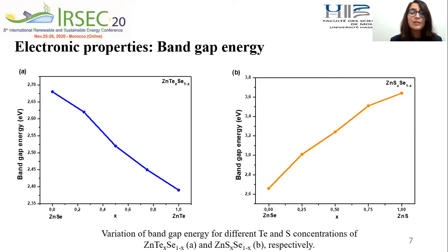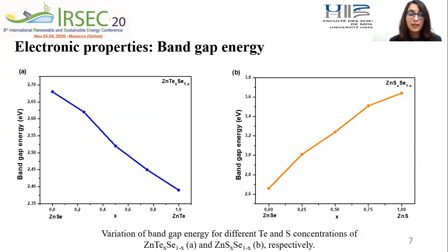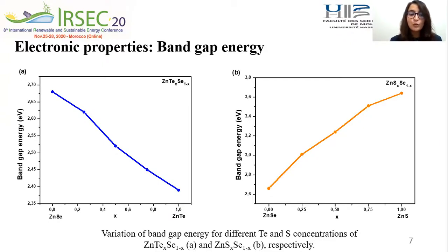For ZnTe-Se, the band gap decreases with the increase of Te concentration, from 2.68 to 2.38 eV. For ZnS-Se, the band gap increases with the increase of S concentration, from 2.68 to 3.64 eV.